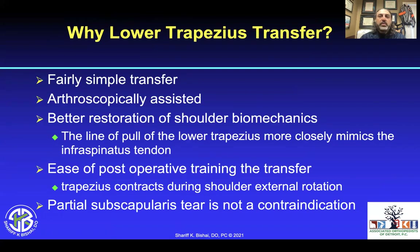Why is the lower trapezius a good option? It's fairly simple and arthroscopically assisted. It offers better restoration of shoulder biomechanics — the line of pull of the lower trap is very similar to that of the infraspinatus. Post-operative training is easier: as it contracts, the shoulder will externally rotate, and if brought more anterior, it will forward flex. A partial subscapularis tear is not a contraindication.